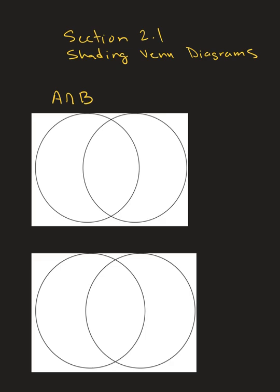Let's start with A intersect B — we looked at that one last time, so it's a good review. First I need to label my circles: which circle is A, which is B. Remember, intersection is where they overlap, so I'm looking at the two circles and finding where they overlap. That's the visual representation of A intersect B — where the two sets join, what they have in common.